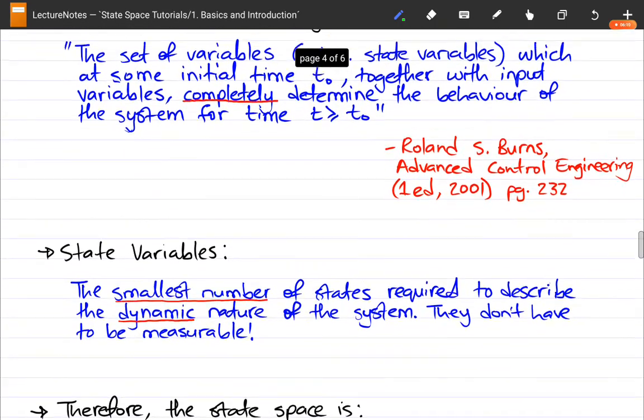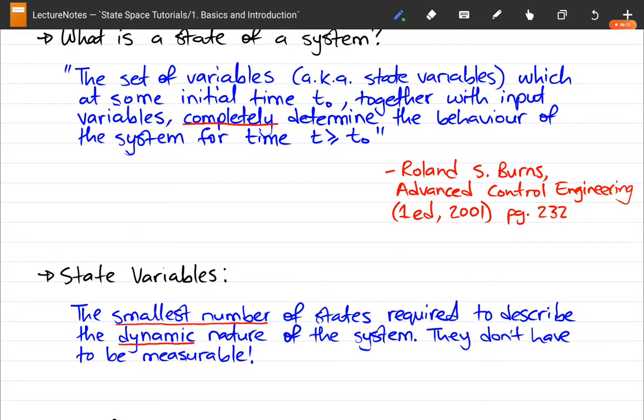Now what is the state variable? This is the smallest number of states required to describe the dynamic nature of the system. They don't have to be measurable. So everything that is underlined is what I want to make specific emphasis on. The smallest number of states—why should there be a smallest number of states? Because you will find that in most cases for your system you will have a lot of states, but you want to keep those states minimum to make the work easy for you.